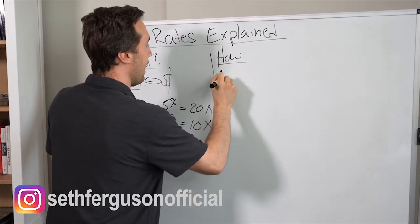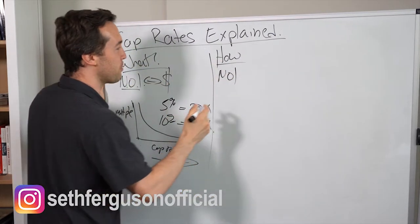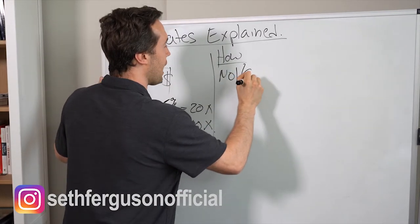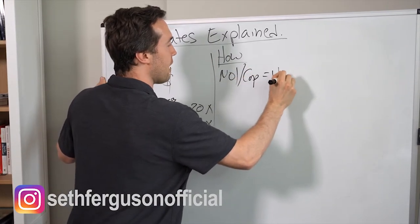But basically, how we use the cap rate is we have to use the income approach formula. And that formula is NOI, you can tell NOI is very important in commercial real estate, divide by your cap rate equals the value of the property.